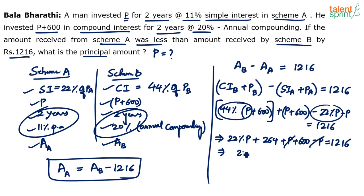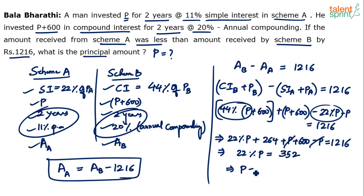22% of P equals 1216 minus 864. Calculation: 1216 minus 600 is 616, minus 264 gives 352. So 22% of P equals 352. I am doing the complete calculation because some of you did not follow last time, but you can cut down the number of steps if you've understood.